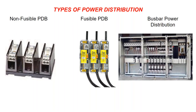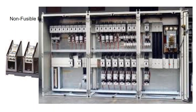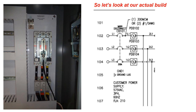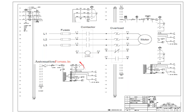Another way to distribute power is with a bus bar. Here the main disconnect feeds a horizontal bus, and all the circuit breakers and motor starters can connect right to that bus — convenient when you have a lot of power and high amps. In the actual build you can see the main disconnect, the power distribution block, the ground lug, the circuit breaker disconnect with the cable going to the handle, and the power distribution.